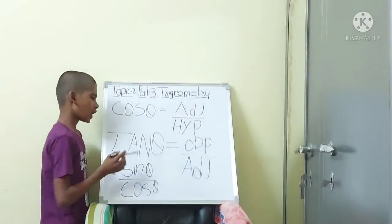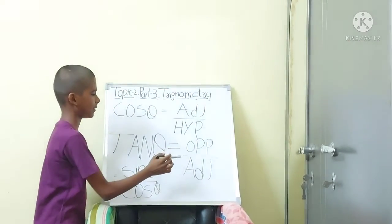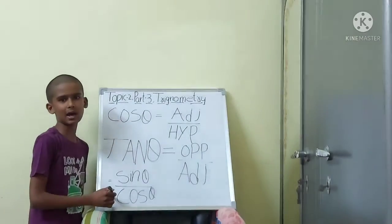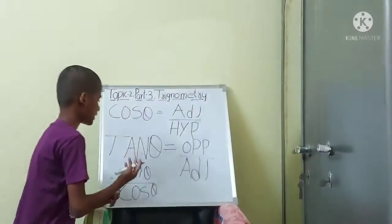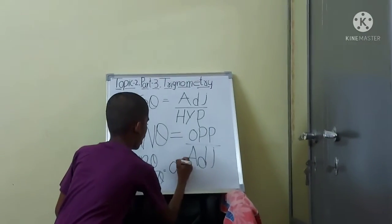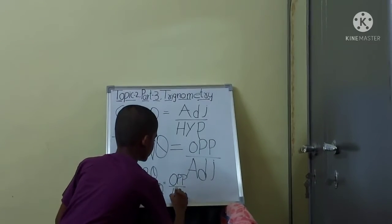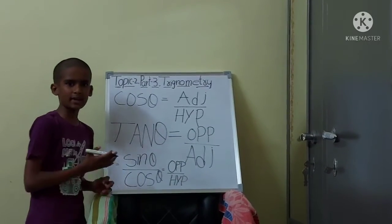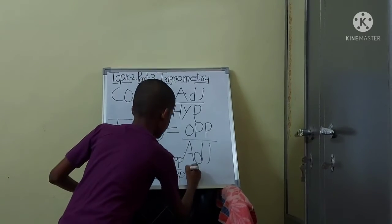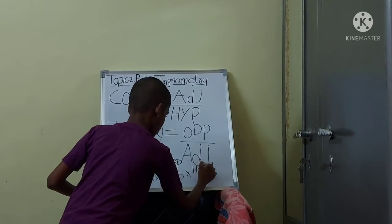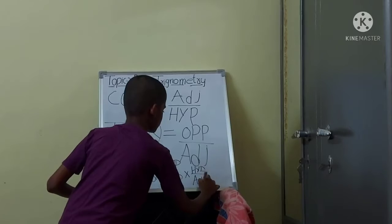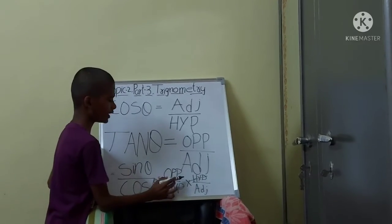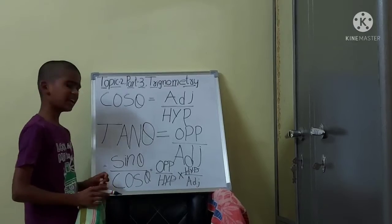Now we will see the formula of tan theta. Tan theta equals opposite side by adjacent side. This can also be written as sin theta divided by cos theta. Sin theta means opposite by hypotenuse, and cos theta is adjacent by hypotenuse. When we divide, the hypotenuse cancels out, leaving opposite by adjacent.